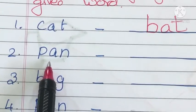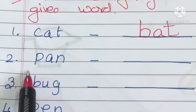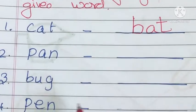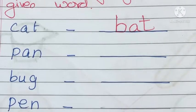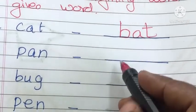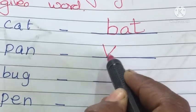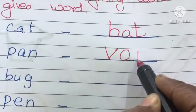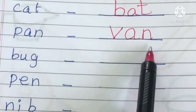See the next word: it is pan. What is the rhyming word for pan? It is ban. Shall we write it? Yes — B-A-N, ban.